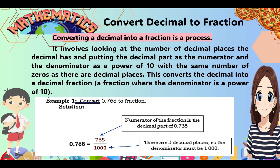Now let's have our topic: converting decimal to fraction. Converting a decimal into a fraction is a process that involves looking at the number of decimal places the decimal has, putting the decimal part as the numerator, and the denominator as a power of 10 with the same number of zeros as there are decimal places. This converts a decimal into a decimal fraction — a fraction where the denominator is a power of 10.